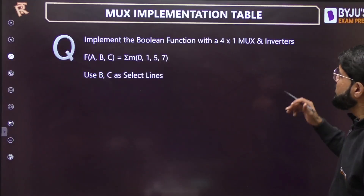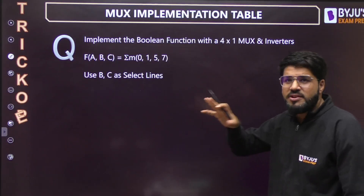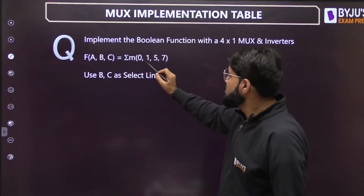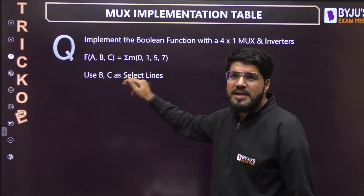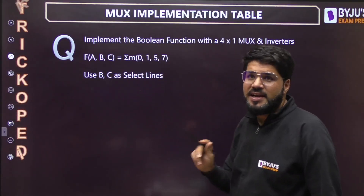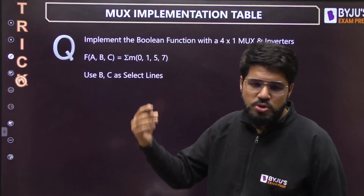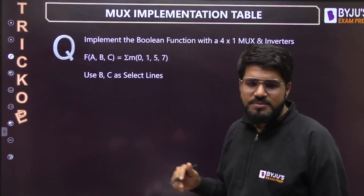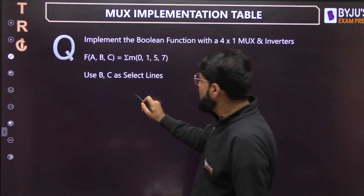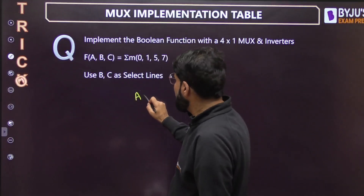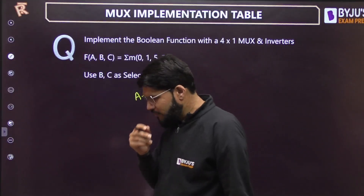So I have a question here: implement the Boolean function with the 4x1 MUX and inverters — extra inverters are allowed. The Boolean function is summation m(0,1,5,7). Now, out of the three variables, B and C should be at the select lines — that is specified. So what will happen to A? A will be going at the input lines.